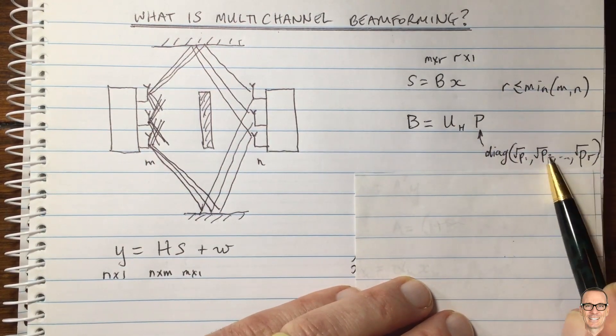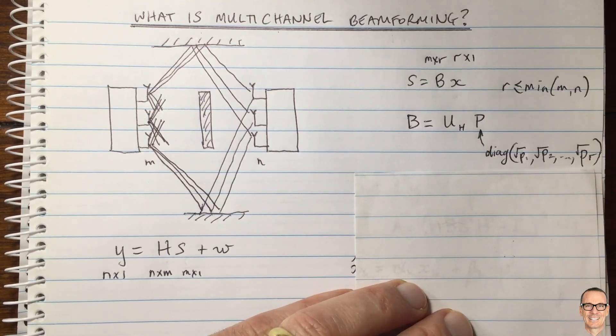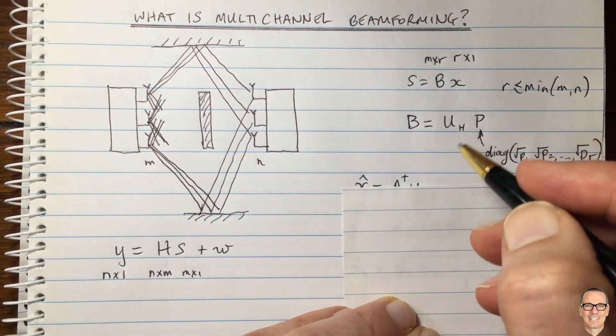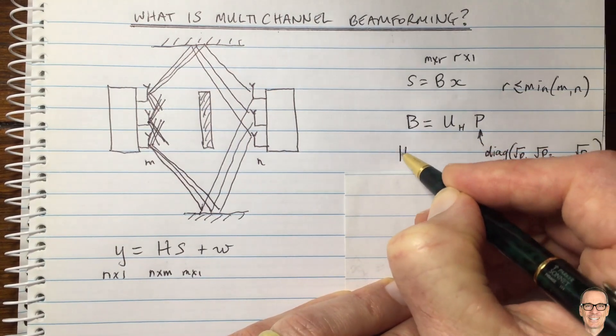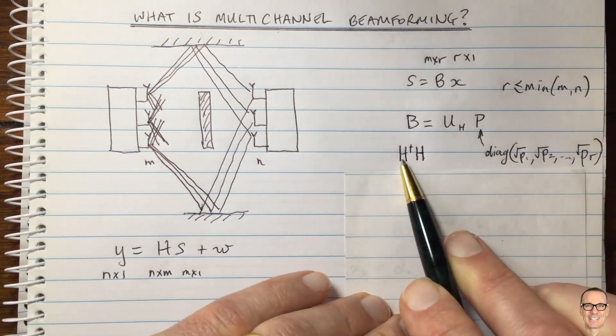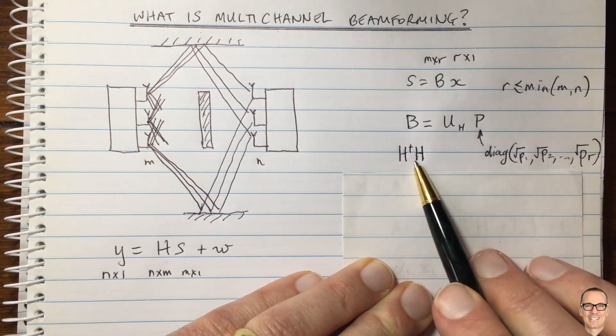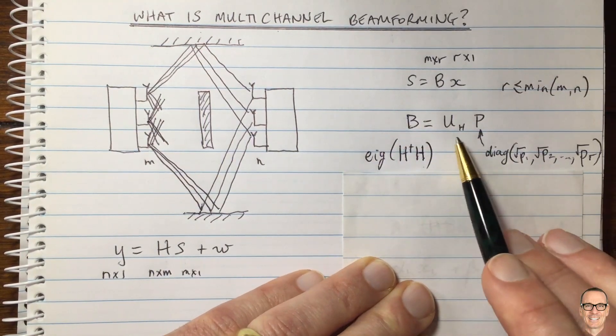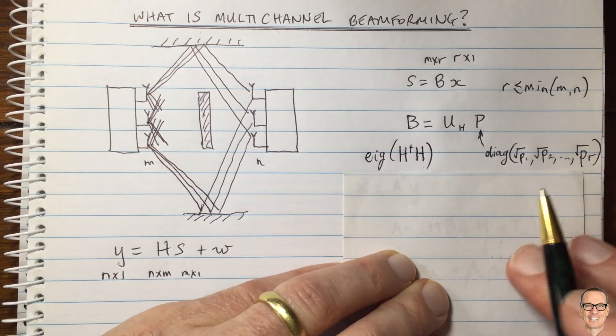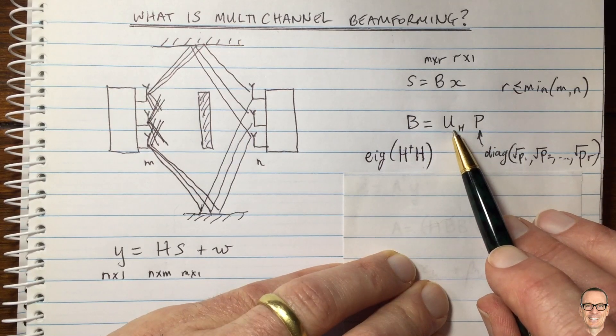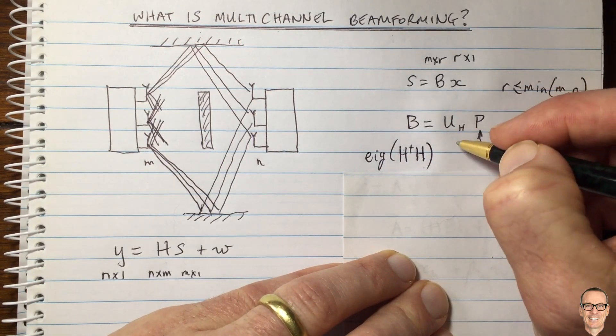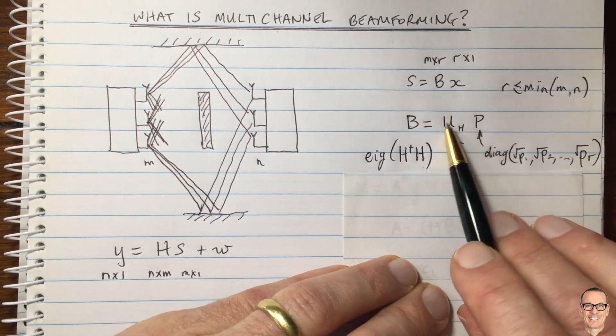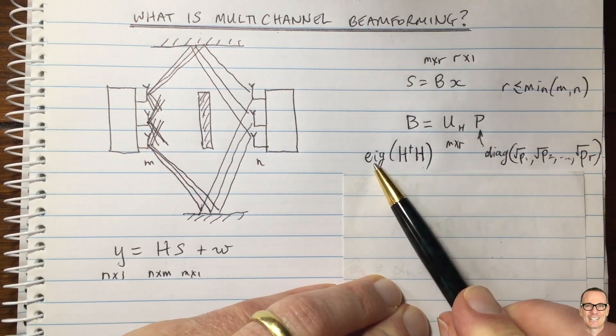So then we've got, and we're choosing how much power we're going to put on each of those data streams here. I'll come back to that in a minute. But the columns of U are the eigenvectors corresponding to the r largest eigenvalues of h dagger h. So h dagger h is the matrix that we are going to look at, and we find the eigenvectors and eigenvalues of this matrix here. Then we take the r strongest ones and we form this matrix U. We've got r different directions here. So this is an M by R matrix. It's the same size as the B matrix. So this is M by R. This is how we do the pre-coding. This is our multi-channel beamforming from eigenvectors.